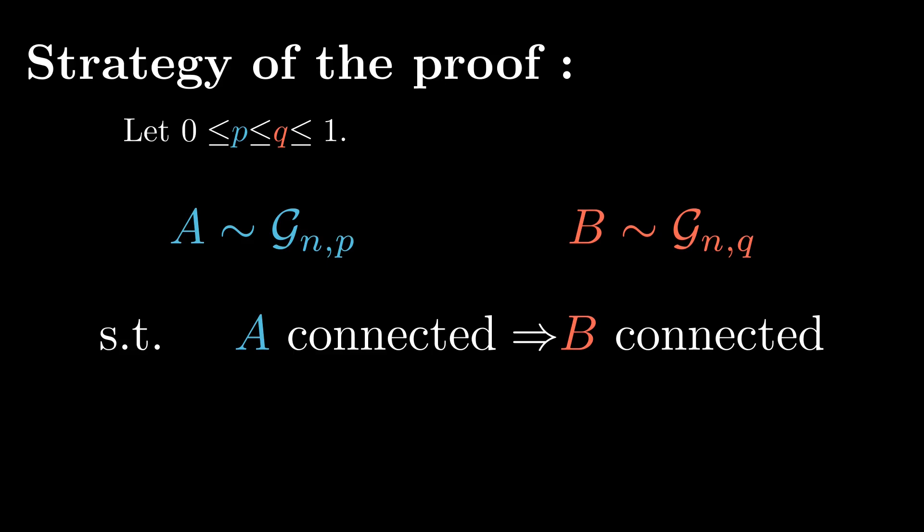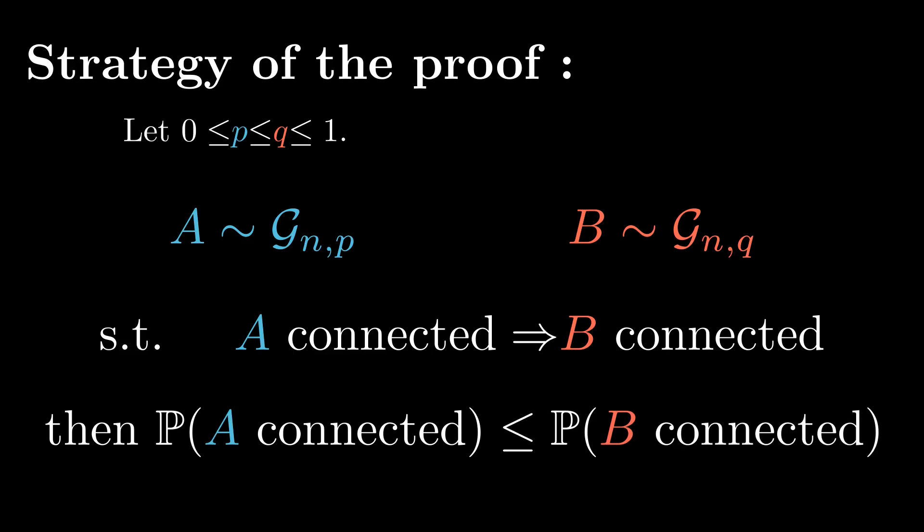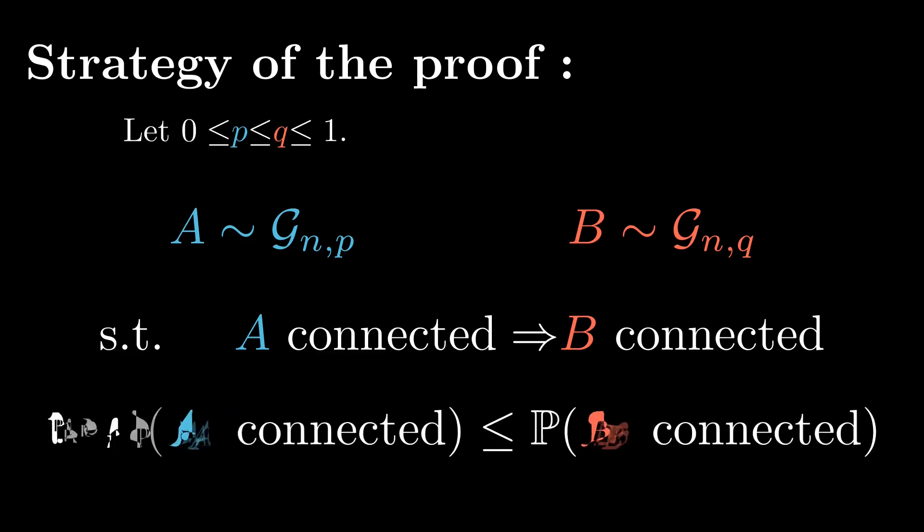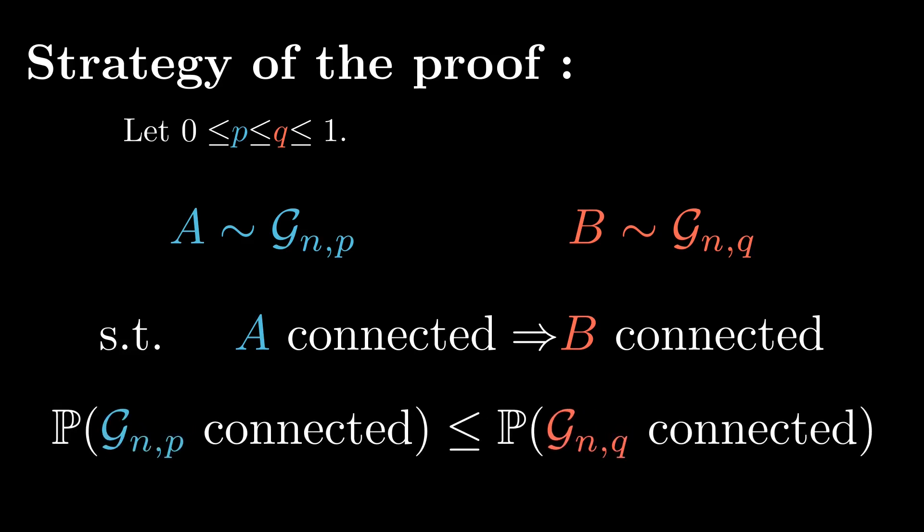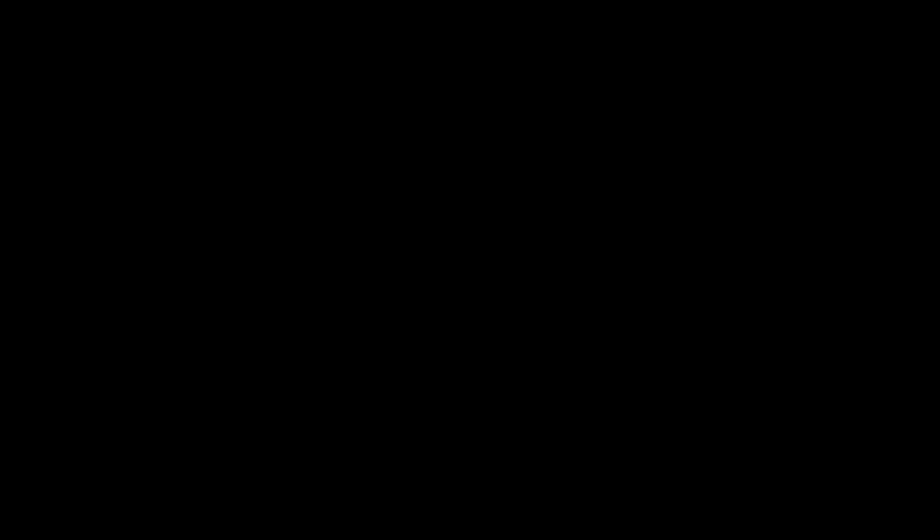Then if we manage to do so, upon taking probabilities of these two events, we get the following inequality, and since A follows the same law as G_{n,p}, the left hand side is nothing but the probability that G_{n,p} is connected, and similarly for the right hand side. So we get this inequality, which would conclude the proof. But being said, of course, we still need to construct such random graphs A and B for this to work. So let's now get into this construction.